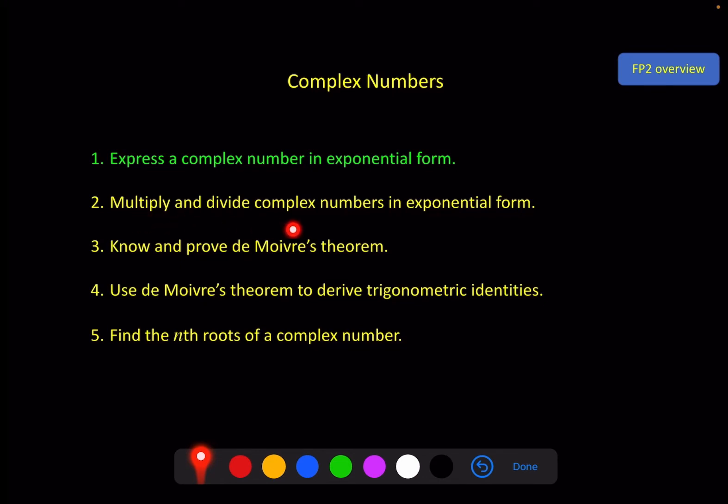We'll multiply and divide complex numbers in that form. Then we'll look at something called de Moivre's theorem, which is a really useful theorem, and we've got lots of things to look at in that. We've got the proof itself, as well as trigonometric identities.